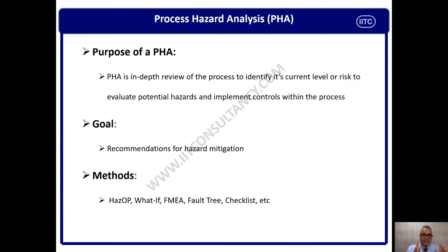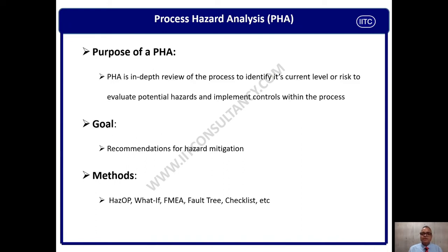For Process Hazard Analysis there are various tools available: Hazard Identification (HAZID), HAZOP, What-If Analysis, FMEA (Failure Mode and Effects Analysis), Fault Tree Analysis, different checklists, SEAL classification, Quantitative Risk Assessment (QRA), and scenario-based risk assessment. Depending on your requirement, you can select the appropriate tool.